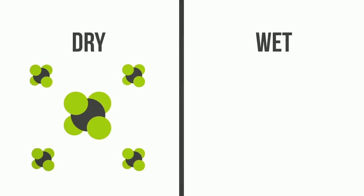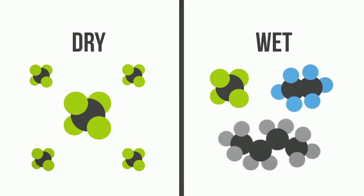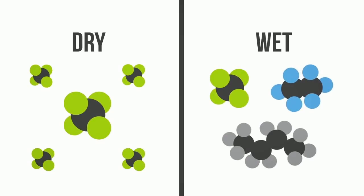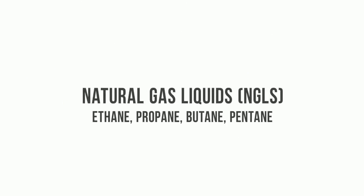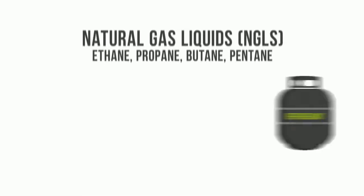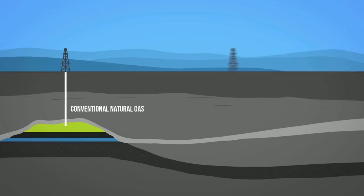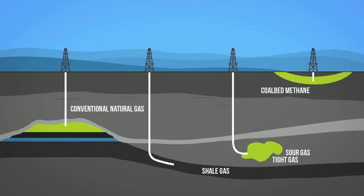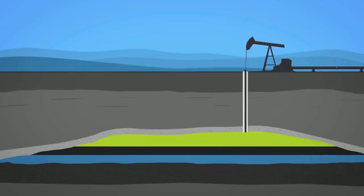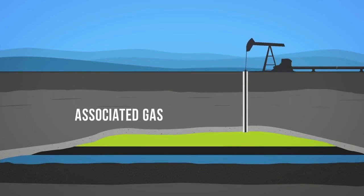Natural gas can be categorized as dry or wet. Dry gas contains mostly methane, while wet gas contains compounds such as ethane and butane in addition to methane. These natural gas liquids, or NGLs, can be separated and sold for various uses such as in refrigerants and to produce plastics. Conventional natural gas can be extracted through drilling wells, while unconventional forms like shale gas, tight gas, sour gas, and coal bed methane have specific extraction techniques. Natural gas can also be found in reservoirs with oil as associated gas, which in the past was flared as waste but is now commonly captured and used.